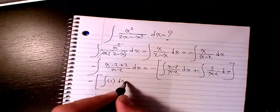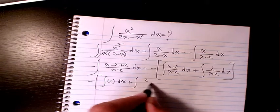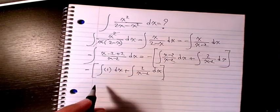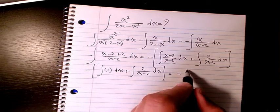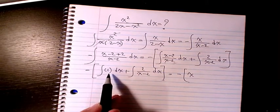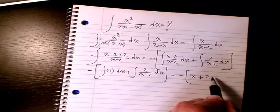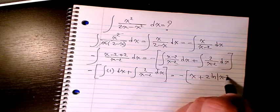After integration I have negative integral of 1, which is x, and the integration of this part is going to be 2 log (x - 2).